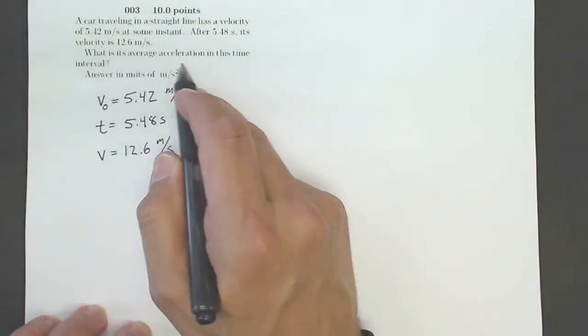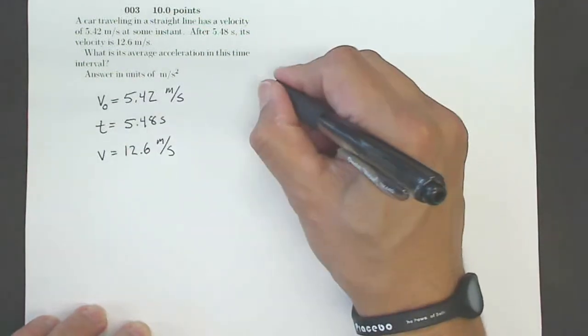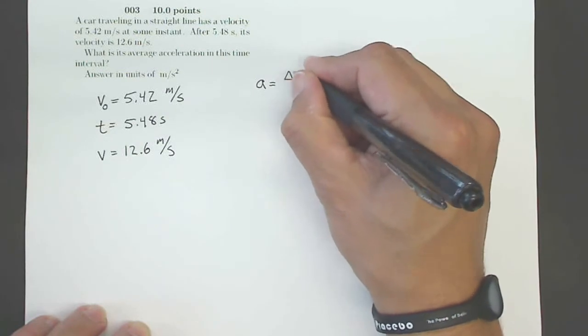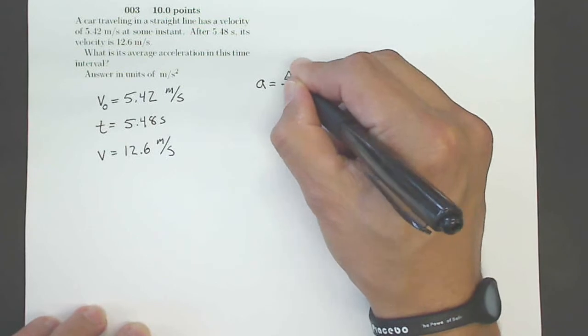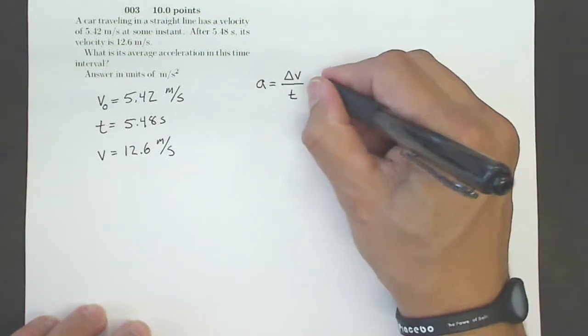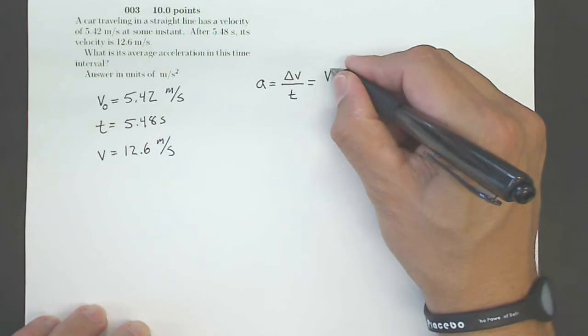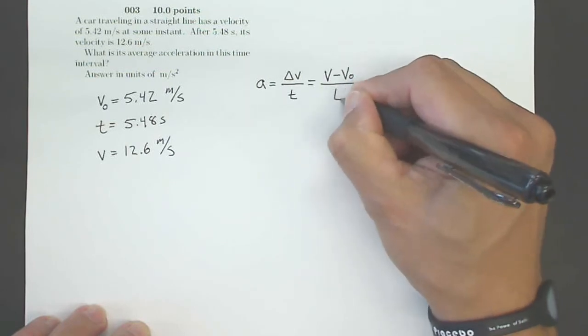What is its average acceleration in this time interval? Well, I have an equation for acceleration. My acceleration is going to be my change in velocity divided by my time. Delta meaning change in how much did my velocity change. Another way to write that is it's going to be my final velocity minus my initial velocity divided by how much time has passed.